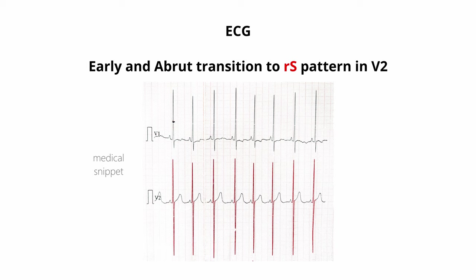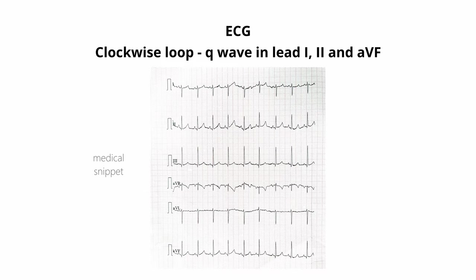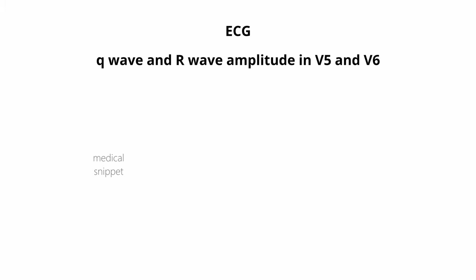Due to the window effect of VSD, the LV forces are seen in the right precordial leads. Clockwise looping is present, that is, Q wave in leads II, III, and aVF.